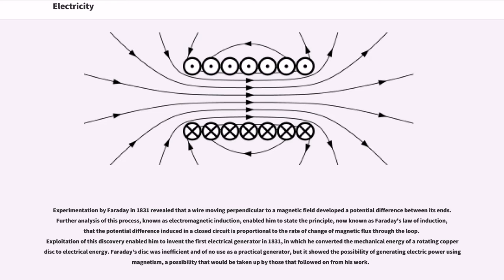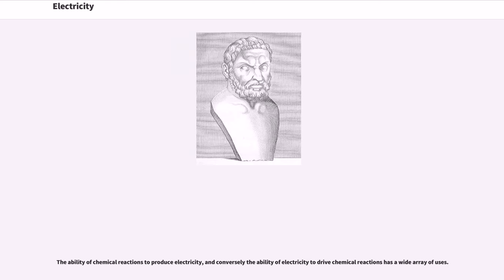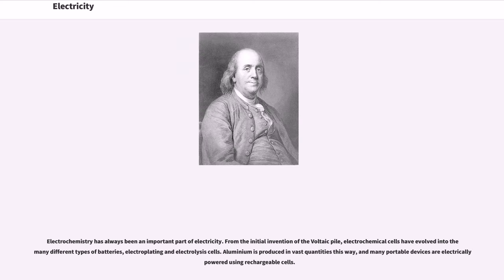The ability of chemical reactions to produce electricity, and conversely the ability of electricity to drive chemical reactions, has a wide array of uses. Electrochemistry has always been an important part of electricity. From the initial invention of the voltaic pile, electrochemical cells have evolved into the many different types of batteries, electroplating and electrolysis cells. Aluminium is produced in vast quantities this way, and many portable devices are electrically powered using rechargeable cells.